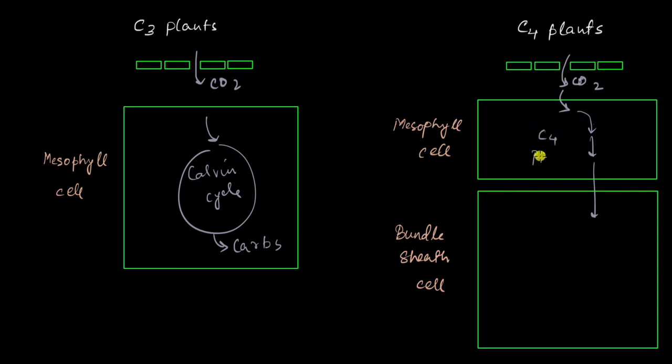So it starts here. This is the C4 pathway and then continues in the bundle sheath cell and then things get recycled here and then go back to the mesophyll cell. And what is released here is carbon dioxide. And then here the carbon dioxide enters the Calvin cycle in the bundle sheath cell, and as usual carbohydrates are formed.